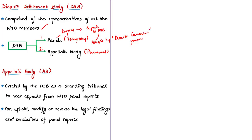If there is no consensus on the report given by the panel in the dispute settlement body, it can be appealed in the appellate body. The appellate body can uphold, modify, or reverse the legal findings and conclusions of the panel's report. If the reports of the appellate body are adopted by the dispute settlement body, they must be accepted by the parties to the dispute.